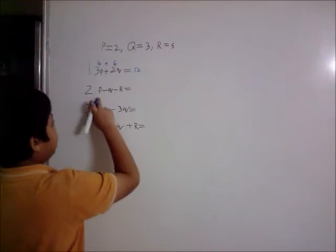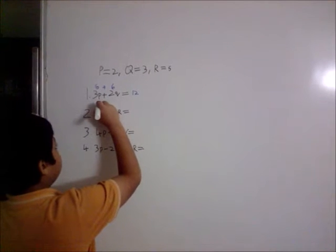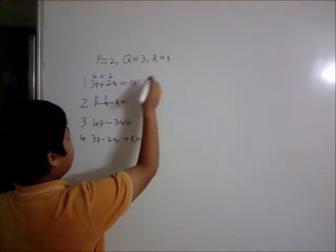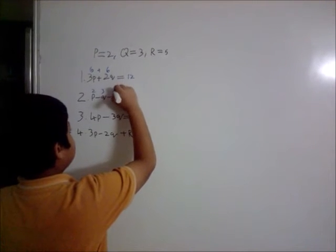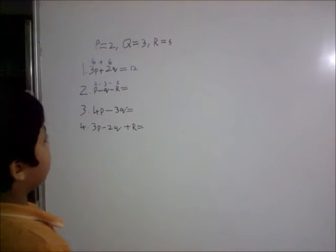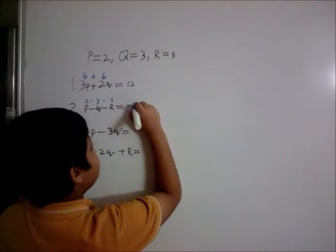Next one, P minus Q minus R. P is 2, Q is 3, and R is 5. So 2 minus 3 minus 5. 2 minus 3 is minus 1, minus 1 minus 5 is minus 6.